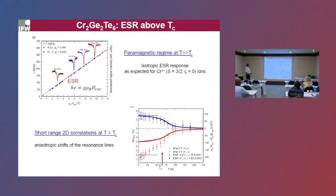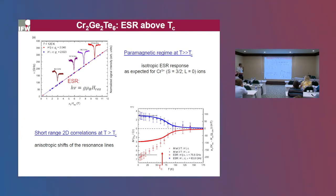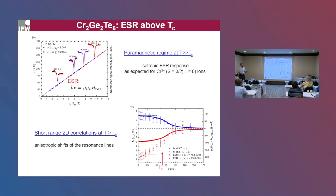When we measure electron spin resonance in the paramagnetic state far above the phase transition at different frequencies, the response is very isotropic — very sharp resonance lines. The slope of the frequency–magnetic field dependence gives a g-factor value very close to the spin-only value, expected for Cr³⁺ ions without orbital momentum in the ground state. However, the first surprise was that as soon as we lower the temperature below 120 Kelvin, the response becomes progressively anisotropic: the resonant field for the out-of-plane direction shifts one way and for the in-plane direction the other way — a signature of developing spin-spin correlations.